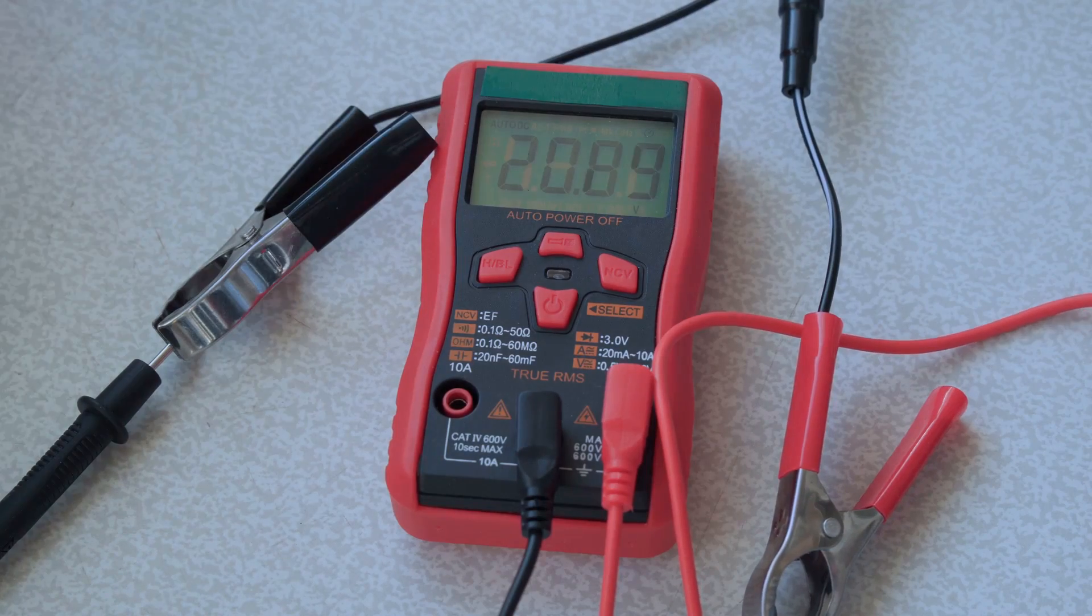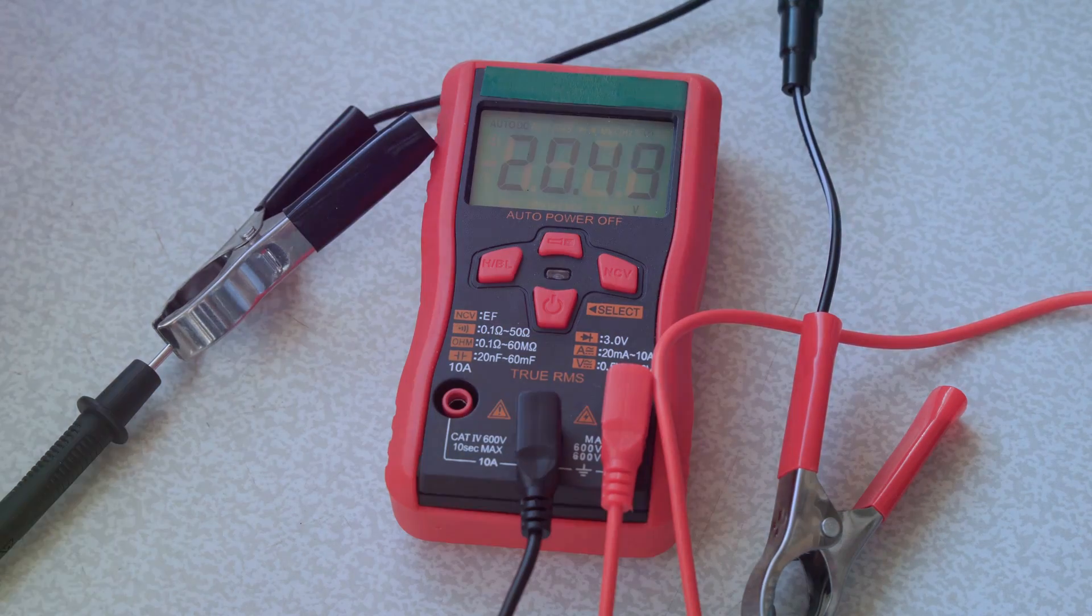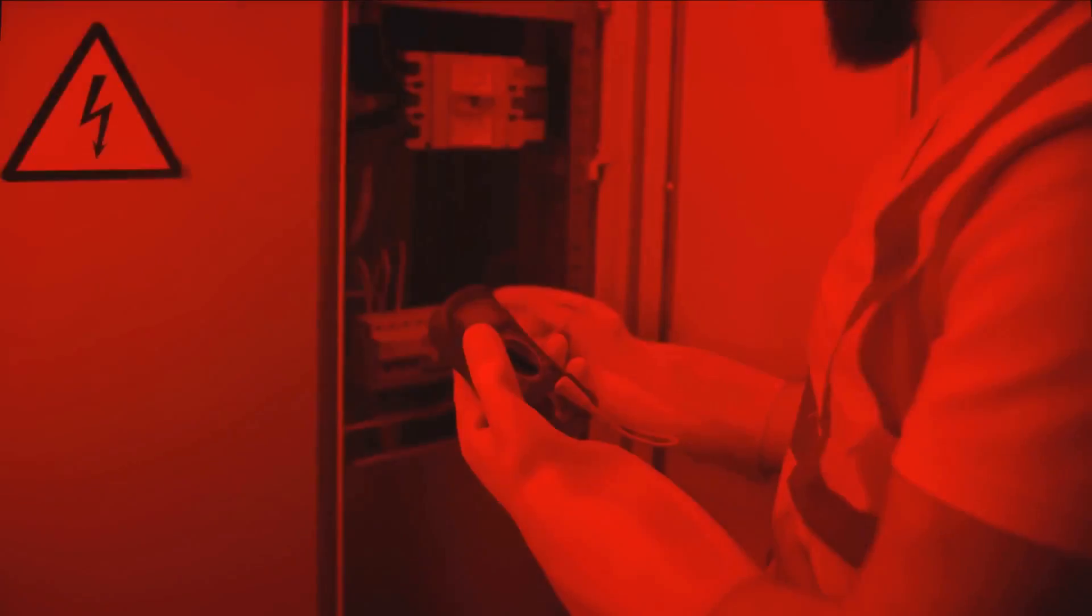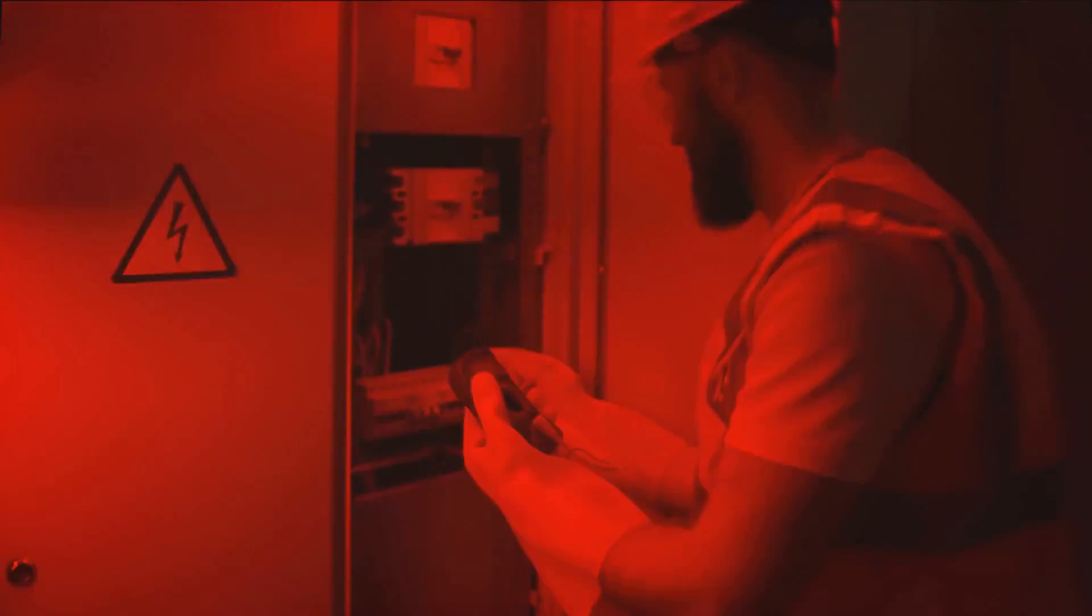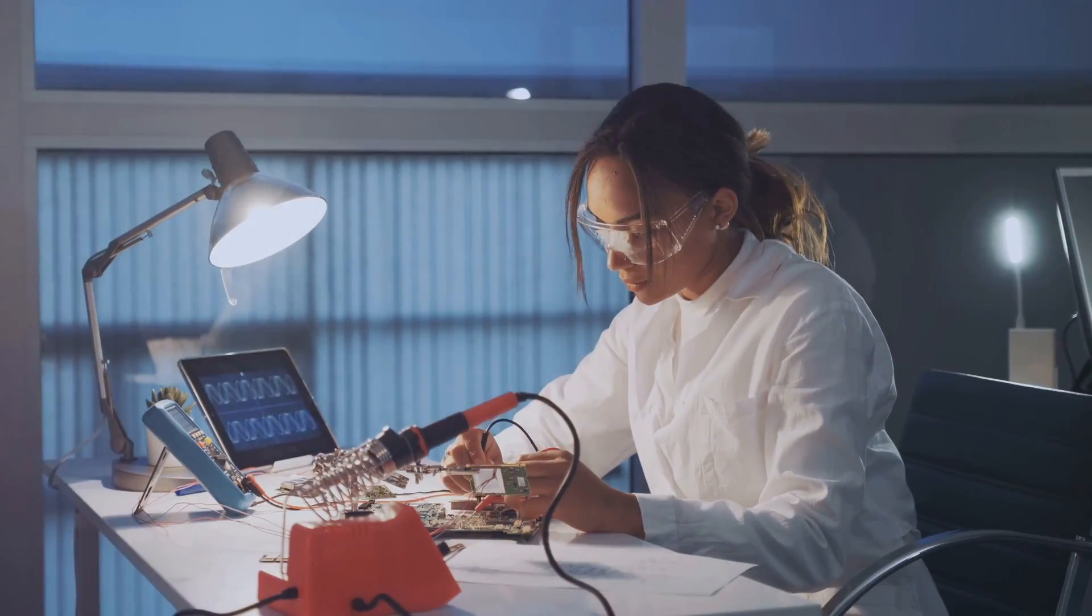The resistance value of a fully functional solenoid coil typically falls within a specific range. If the reading is outside of this range, it's a clear sign of trouble.